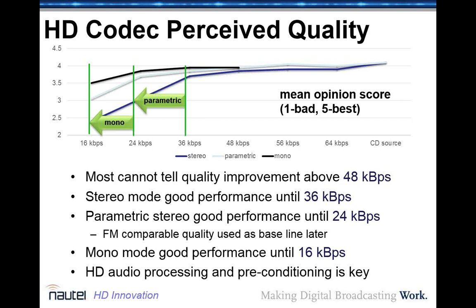In summary: 48 kbps is substantially better than FM today; 36 kbps is actually better than FM today; 24 kbps with parametric stereo is similar to FM; and 16 kbps mono is similar to AM today. Of course, when you account for FM fading and multipath in a typical environment, there is degradation. A key aspect of all this is that in order to get good audio quality at those low bit rates, you really have to have good audio processing and preconditioning. The industry has come a long way in making codec audio sound better since that 2004 study.